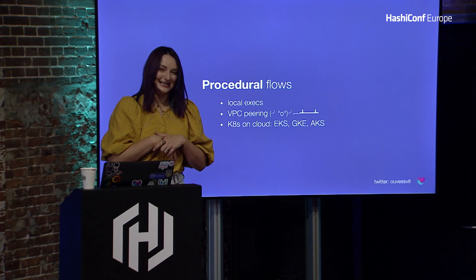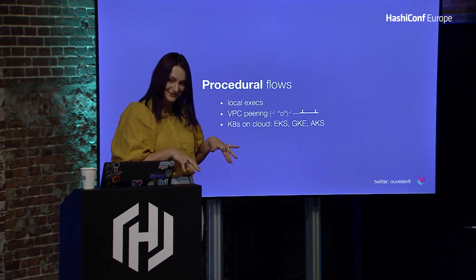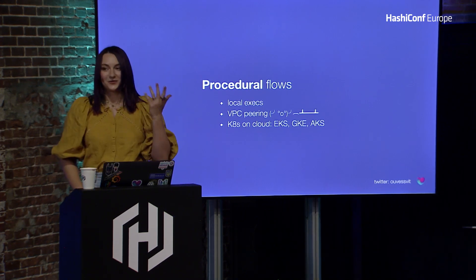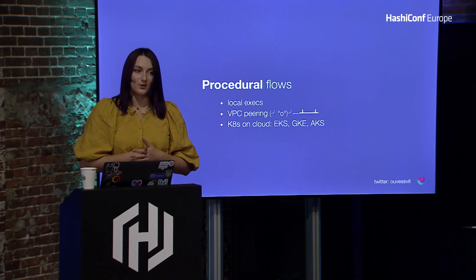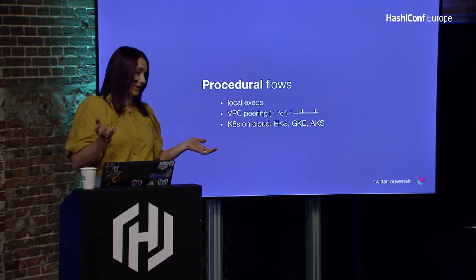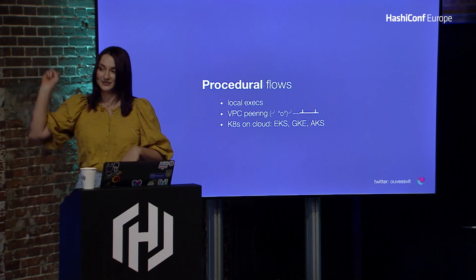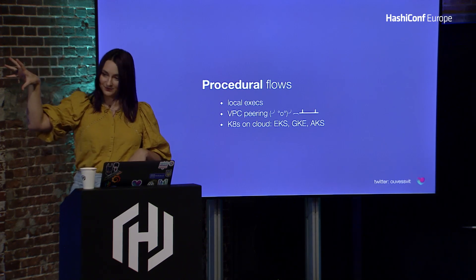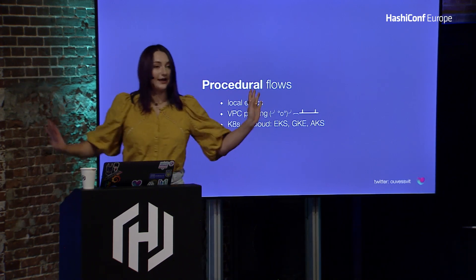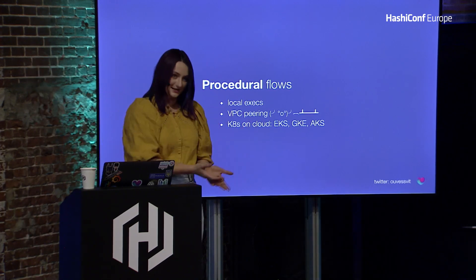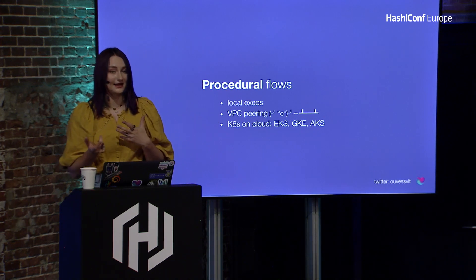There are also local execs, and I know that everybody hates local execs and everybody has local execs in their Terraform. There are also pieces of infrastructure that don't lend themselves easily into Terraform. One example is VPC peering — yes, there are resources to manage that, but in AWS you have to initiate the VPC peering in one AWS account and one VPC, go to the other AWS account, confirm the VPC peering there, wait for AWS to do its thing, and then finalize the whole procedure. You can do it, but is it easy and does it really sound like an elegant solution?